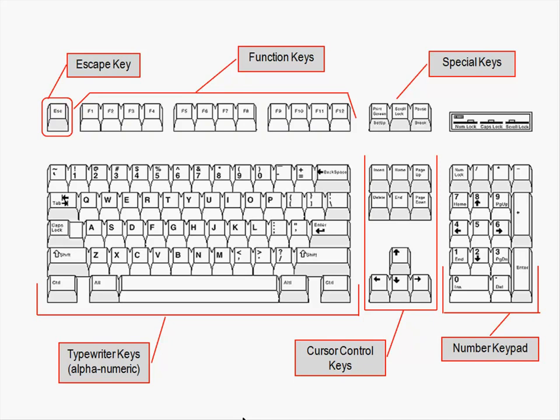There's a row of function keys numbered F1 through F12. We're not going to cover them today, but if you were using a computer at a point of sale in a store, you might assign specific functions to those keys. There are also some specialized keys near the upper right such as Print Screen, Scroll Lock, and Pause — we won't cover those today either as they're rarely used.